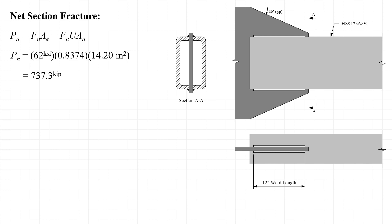Finally, substituting in F sub U equals 62 KSI, U equals 0.8374, and A sub N equal to 14.2 inches squared, we find that the nominal strength with respect to net section fracture is 737.3 kips, and applying a resistance factor of 0.75 for net fracture, we find that the design strength is 553.0 kips.